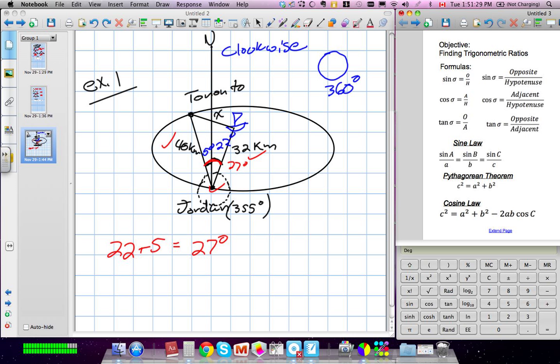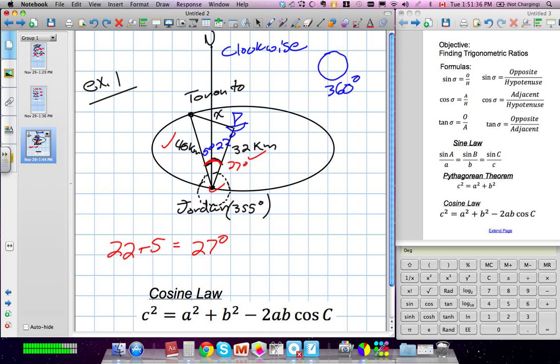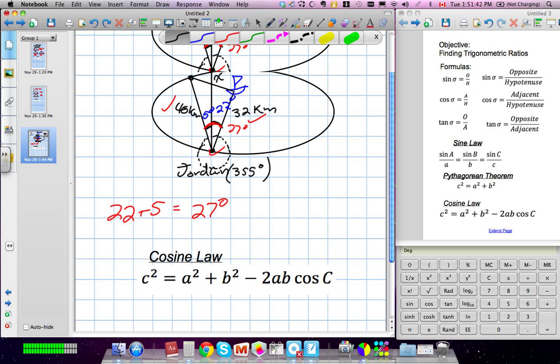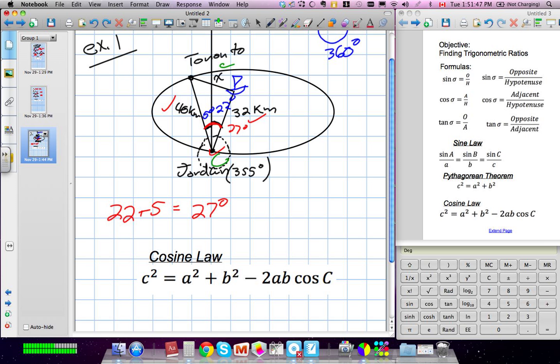Now, because X is what we're looking for, that's going to be our side C, and then our A and B. So side C is our X. We have X² equals our A, which is 32. So we have 32² plus our B, which was 40, minus 2 times 32 times 40 times cos 27 degrees.